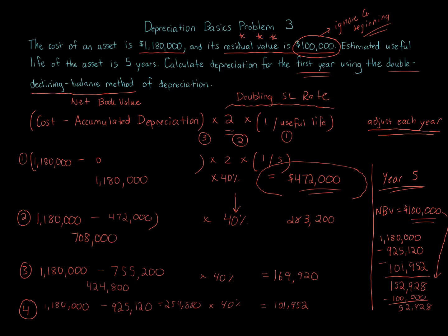That's really everything for double declining balance. The only other thing you could see is that in the first year, the asset is placed in service partway through the year. You would calculate depreciation under double declining balance and then multiply it by the proportion of the year remaining. For example, if it was placed in service with two months left, you'd multiply by two over twelve. You'd adjust it the same way as in straight-line. Double declining balance can be challenging, but go through this example many times and you'll understand it.